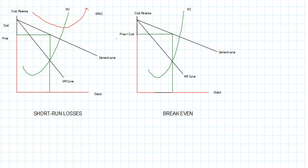For the second diagram, you need to draw the average cost curve so that it intersects the demand curve at this point. Ensure that your MC intersects the AC curve at its minimum point. That is very important.